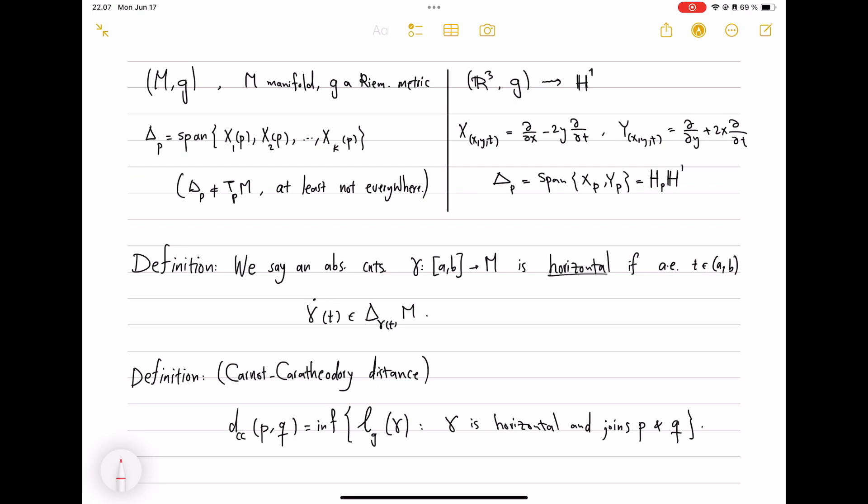And you can compare on the right to the story in the Heisenberg group H1 where these special vector fields were explicitly given by the formulas on the screen. And the subspace was called the horizontal subspace written with HPH1.